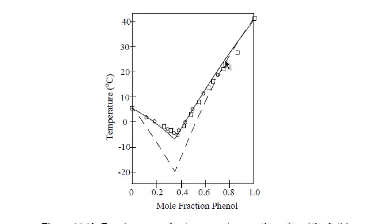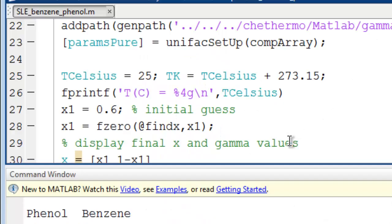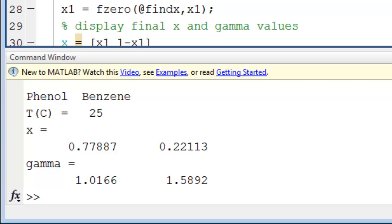Let's change the temperature to 5 degrees C, where we expect a solubility near 40 to 50 percent. So I change the temperature and run. And you can see 40 to 45 percent.